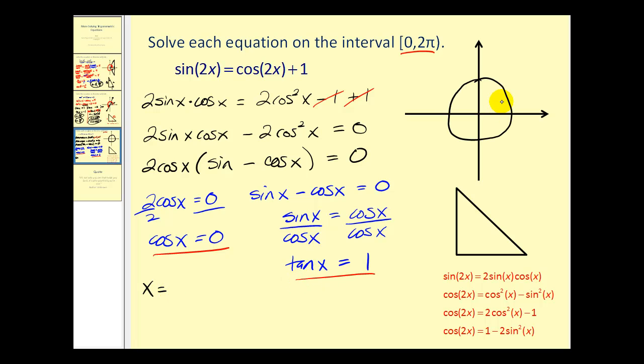Remember, on the unit circle, cosine theta equals x. So we want the points on the unit circle where the x coordinate would be zero. Those occur on the y-axis. So on this interval, we would have pi over two radians. And also, three pi over two.